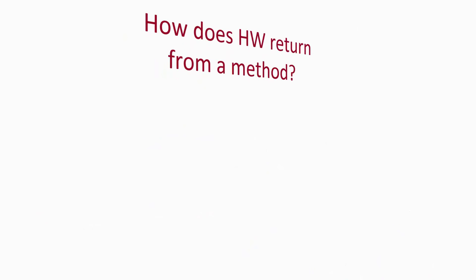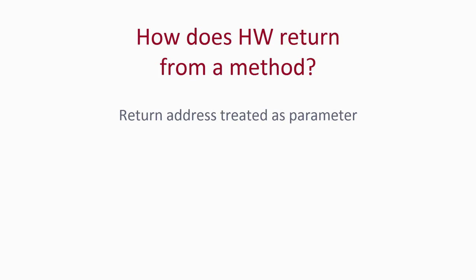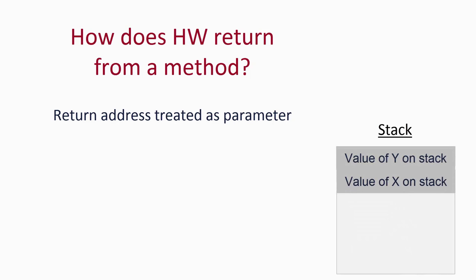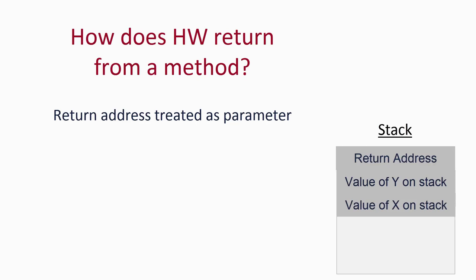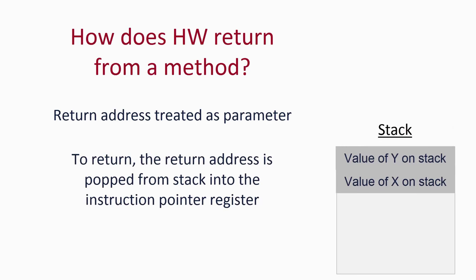So how do we solve the problem of knowing where to go back to at the end of a method? This is actually quite simple — we treat the address of the caller as a parameter to all methods. So before we jump to the code for a method, we push the return address to the stack, then jump to the code. When we want to return from a method, we simply pop the return address from the stack and set the instruction pointer register to that value. So now we roughly understand how lines of code and methods translate into instructions, operations, and data, and how those are stored in three places: registers, the stack, and general memory.